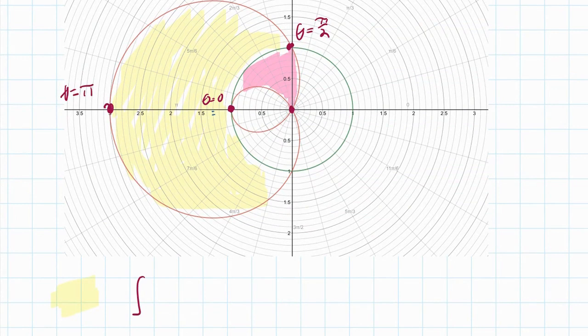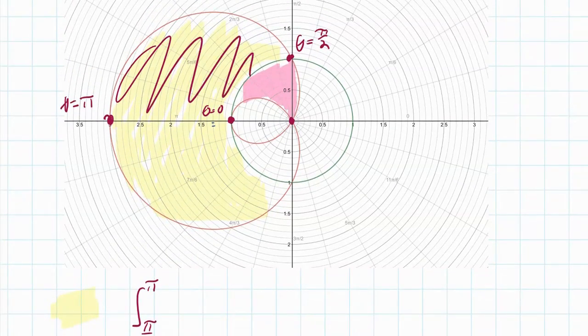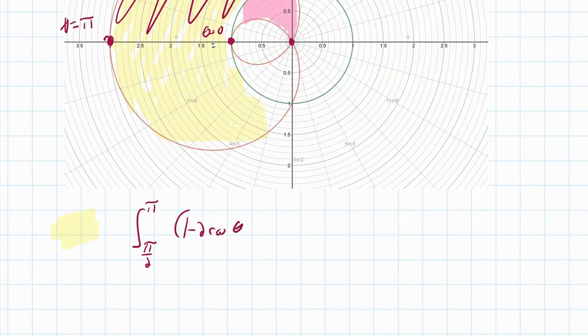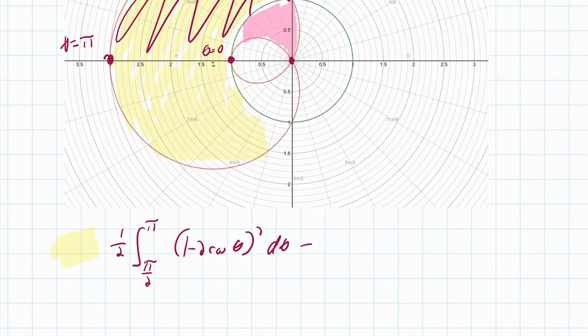So basically what I'm arguing is this is the integral of the outer one, which is from pi over two to pi. The outer one is going to be pi over two to pi of, and I'm doing this area here. So pi over two to pi of the outer one, which is the one minus two cosine of theta quantity squared. And I have the one half right here, d theta minus that same integral. I can just do it as a single one, or minus the integral of pi over two to pi of one squared d theta, and we'll keep the one half factored out.